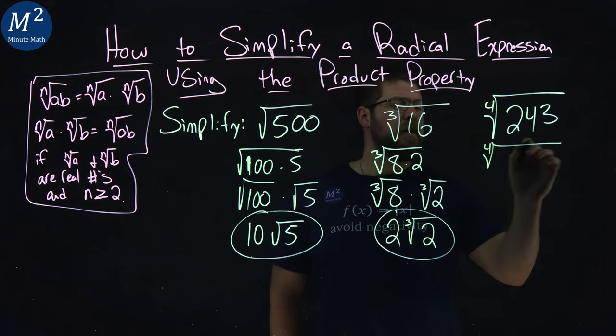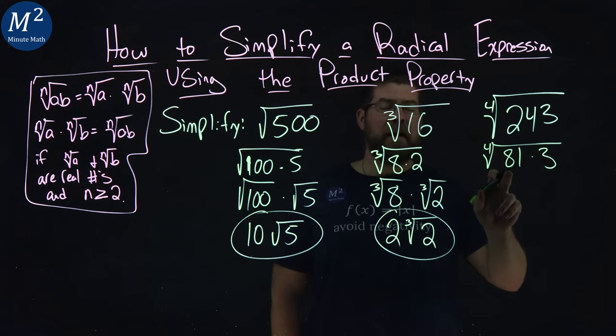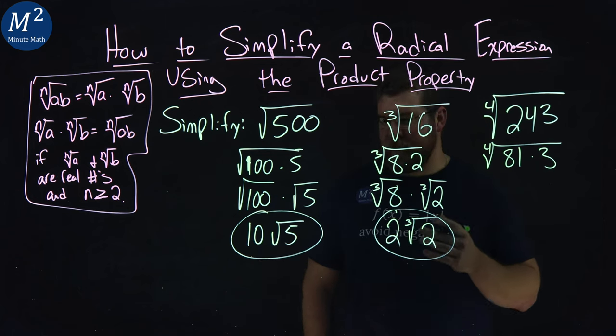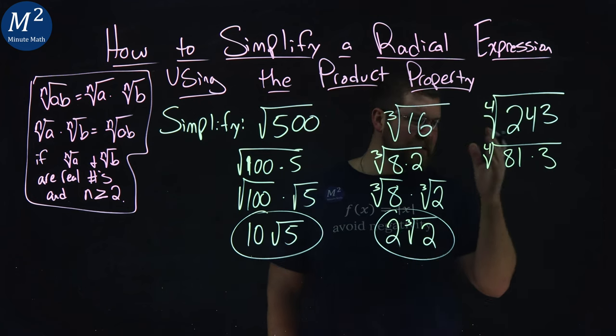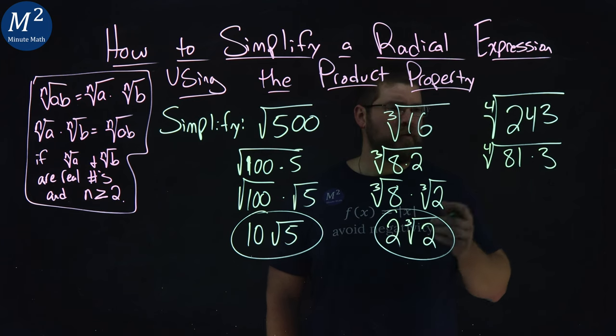Well, 243 is the multiplication of 81 times 3. Right? 3 times 80 is 240, and then 3 times 1 is 3. 81, sometimes you'll memorize this. I don't always have it memorized, but occasionally. 81 is a perfect fourth. That's what we're going to call it.